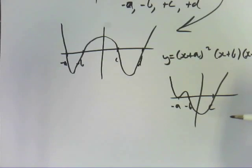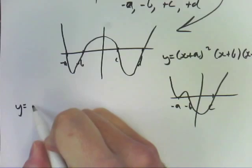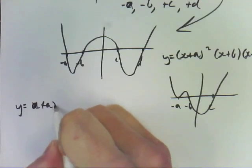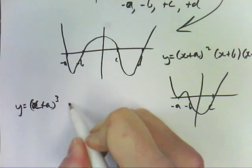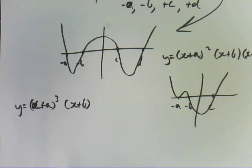Now there's one more type of quartic graph that you need to worry about, and that's if we have a cubed factor, so x plus a cubed, x plus b. If it's a cubic factor, it looks like a standard cubic graph at that point, so it's called a point of inflection.